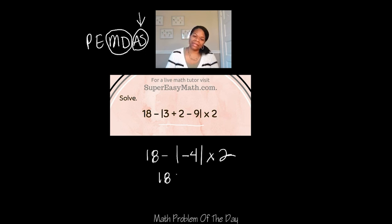So now I'm going to rewrite it again, but with just plain 4, dropping the absolute value symbols, because I've already completed that. I've already solved the absolute value portion.